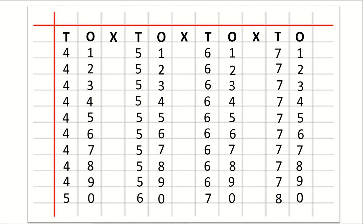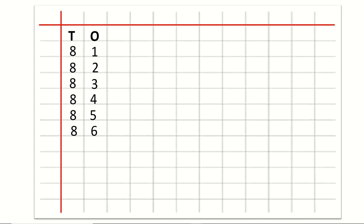Now we are going to learn how to write counting 81 to 90. After O we will write cross. Then T for tens, O for ones. Under T and O: 8 and 1 for 81. After 81: 82, 83, 84, 85, 86, 87, 88, 89, 90.